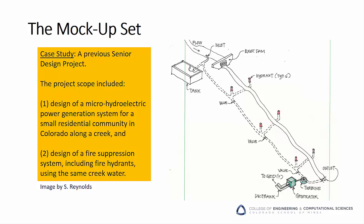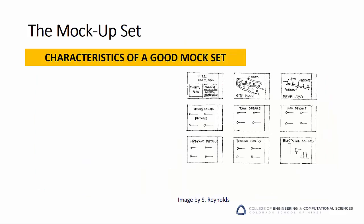To illustrate this iterative approach to creating technical drawings, we'll use a previous senior design project example. The Micro Hydro team was tasked with designing a micro hydroelectric power system for a small community in Colorado. In addition to providing electricity, the team was also asked to design a fire suppression system along the creek. After reviewing some possible design options with the community, the team decided to move forward with the design concept shown. With the high-level concepts settled, the team decided to begin the journey from a rough conceptual sketch to a detailed engineering solution. Their first step was to create a mock-up drawing set.